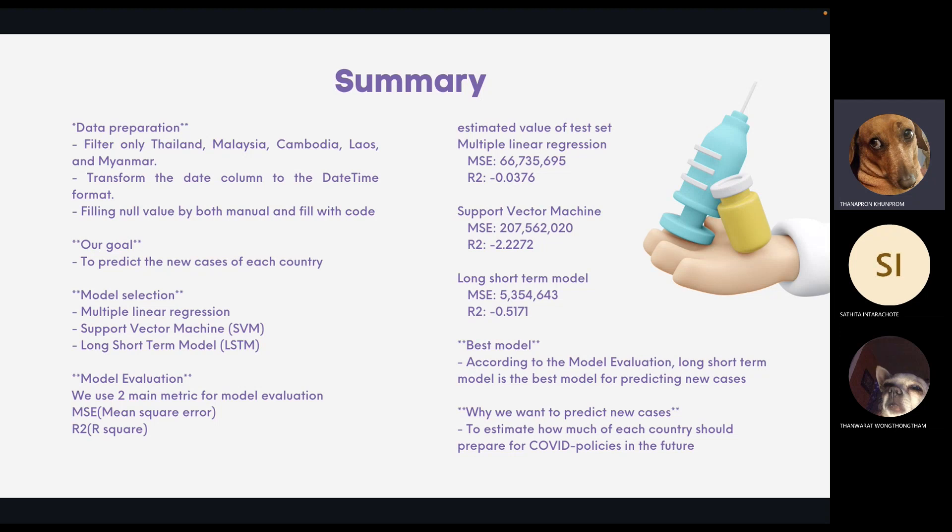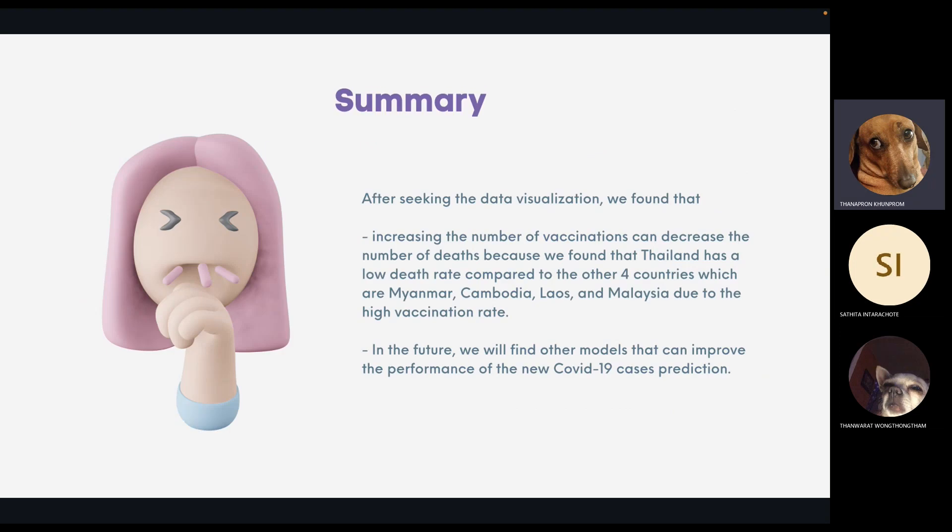And after taking the data visualization, we found that increasing the number of vaccinations can decrease the number of deaths, because we found that Thailand has a lot less compared to the other four countries which are Myanmar, Cambodia, Laos, and Malaysia, due to the high vaccination rate, because vaccines can prevent people from getting COVID-19. Moreover, we will find other models that can improve the performance of the new COVID-19 case prediction.